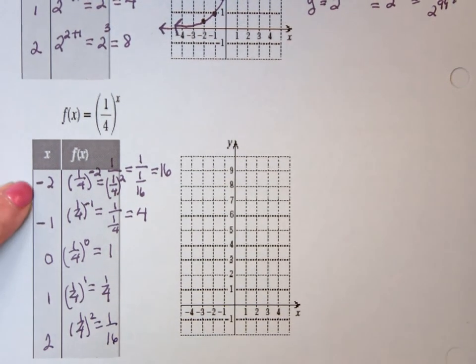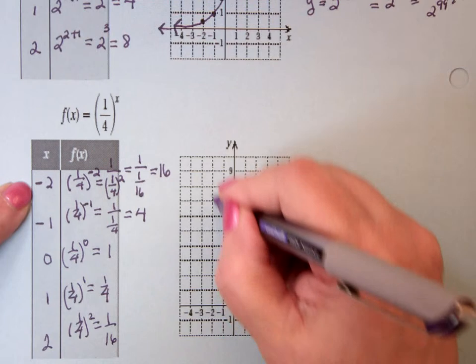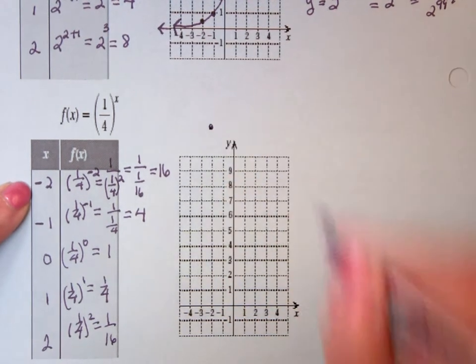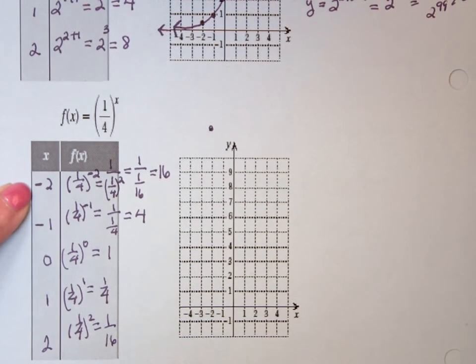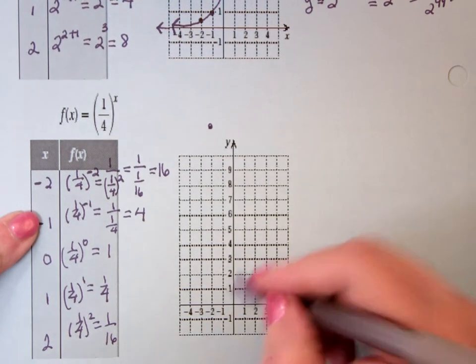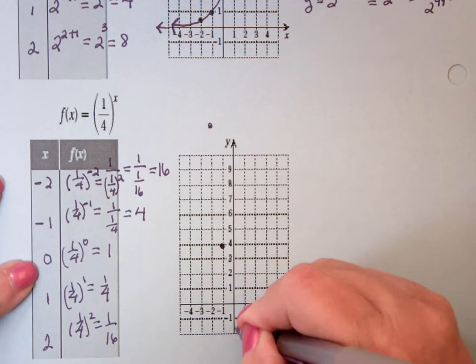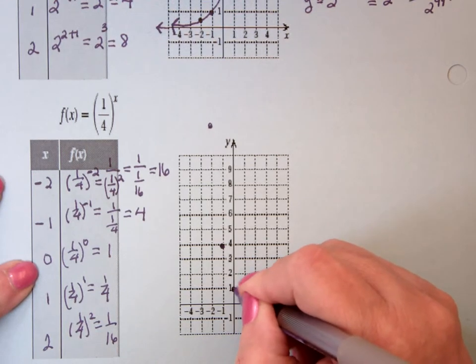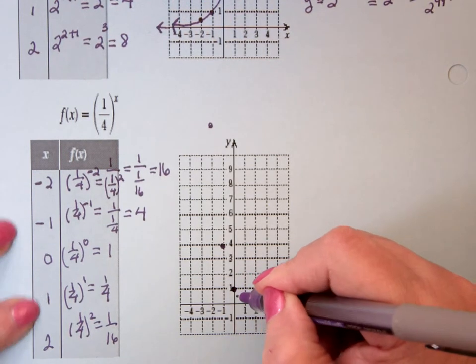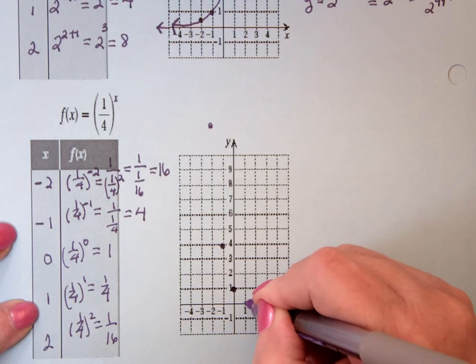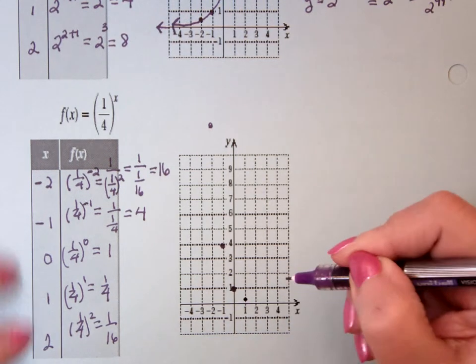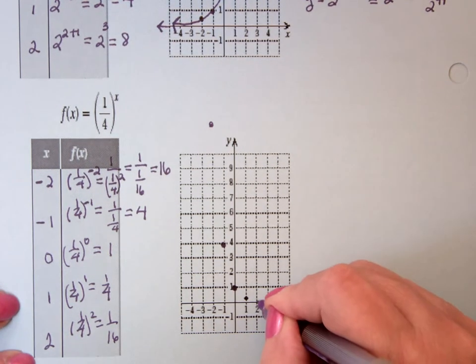So at negative 2, I'm way up here someplace. I'm off my graph paper. At negative 1, I've got 4. At 0, I have 1. At 1, I have 1 fourth. At 2, I'm 1 over 16.